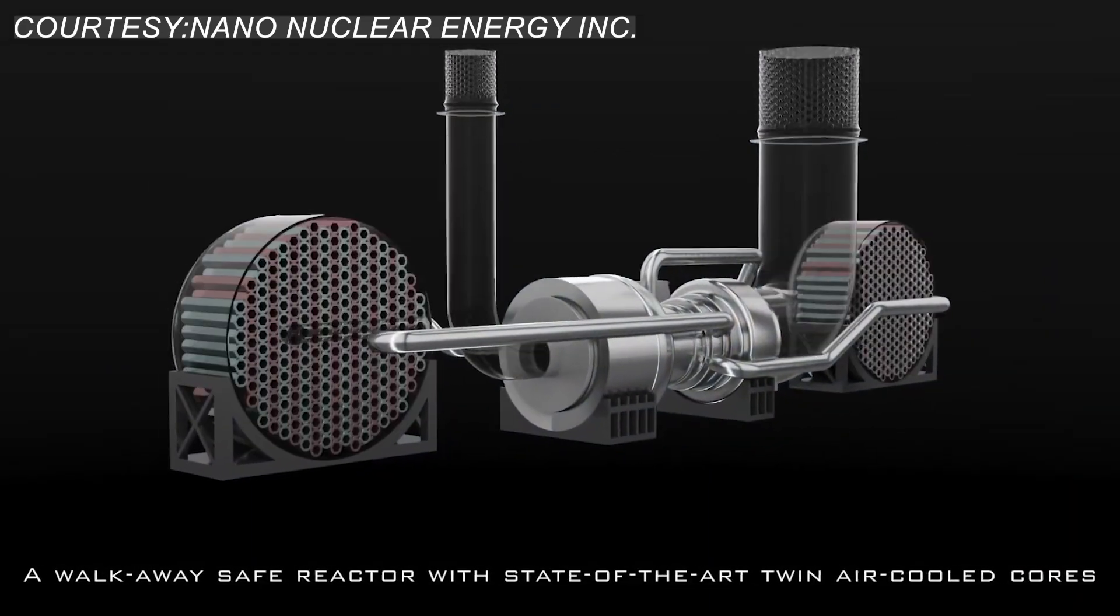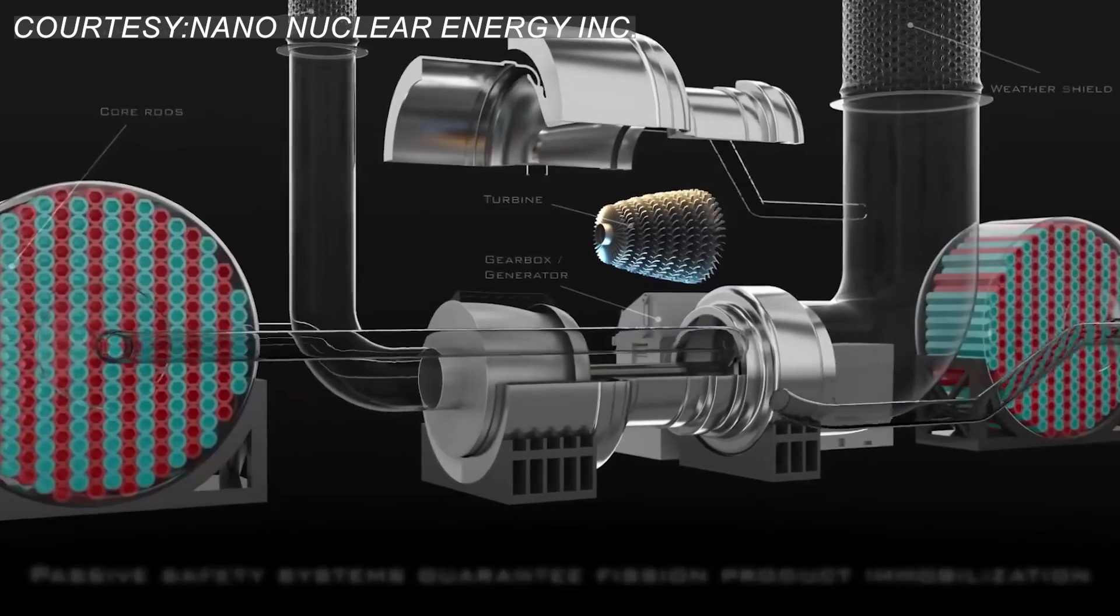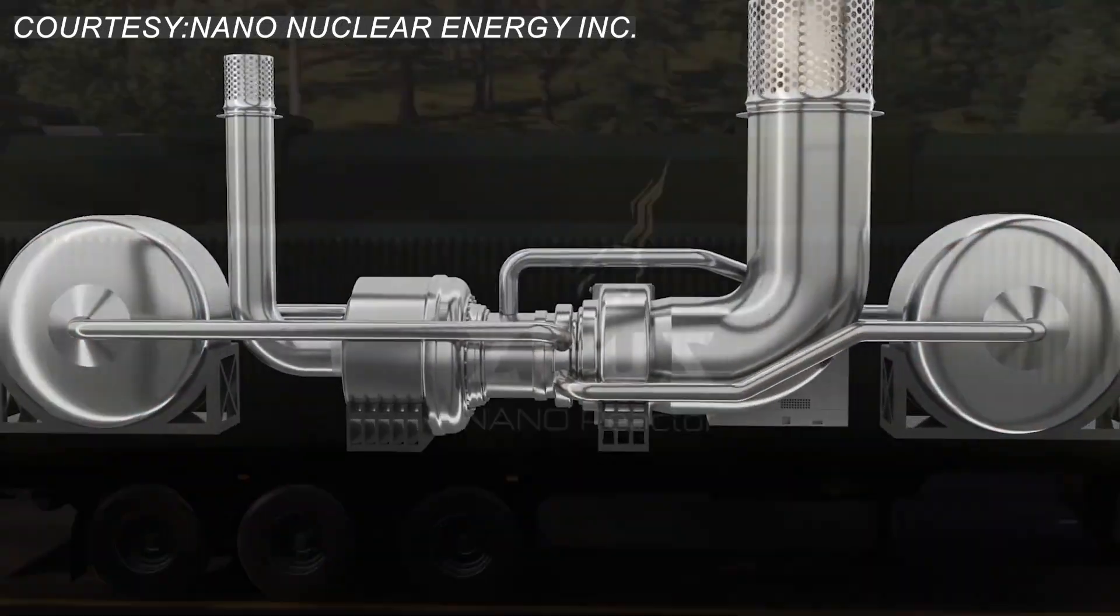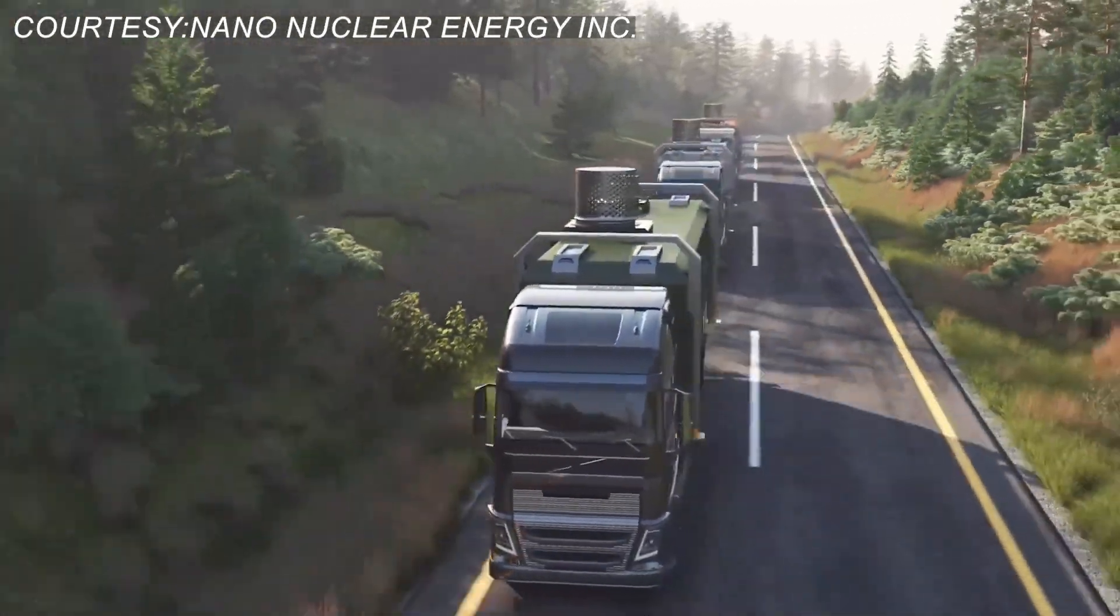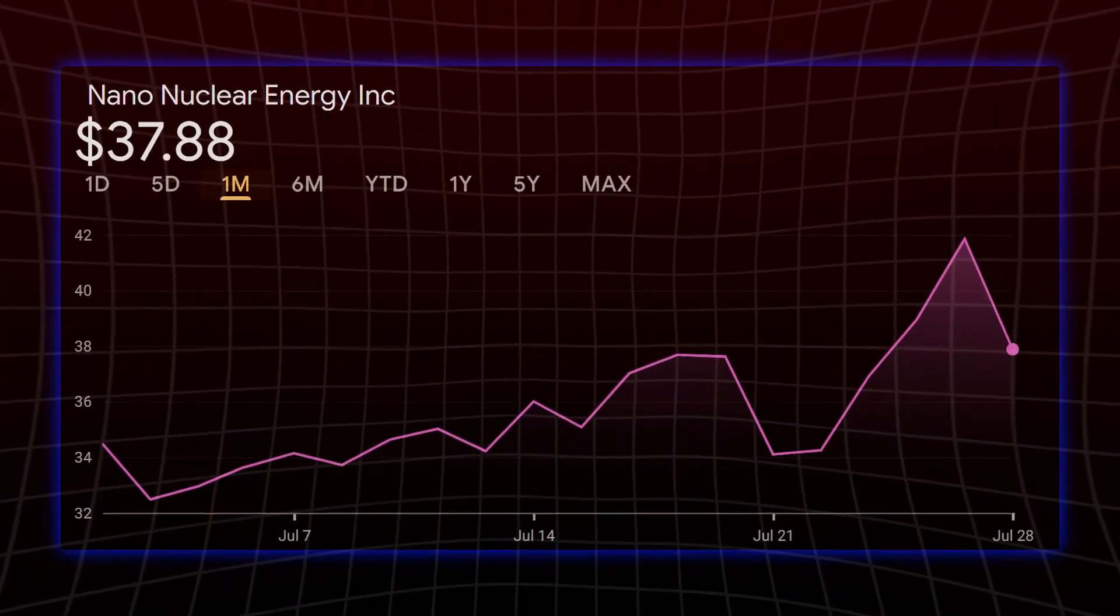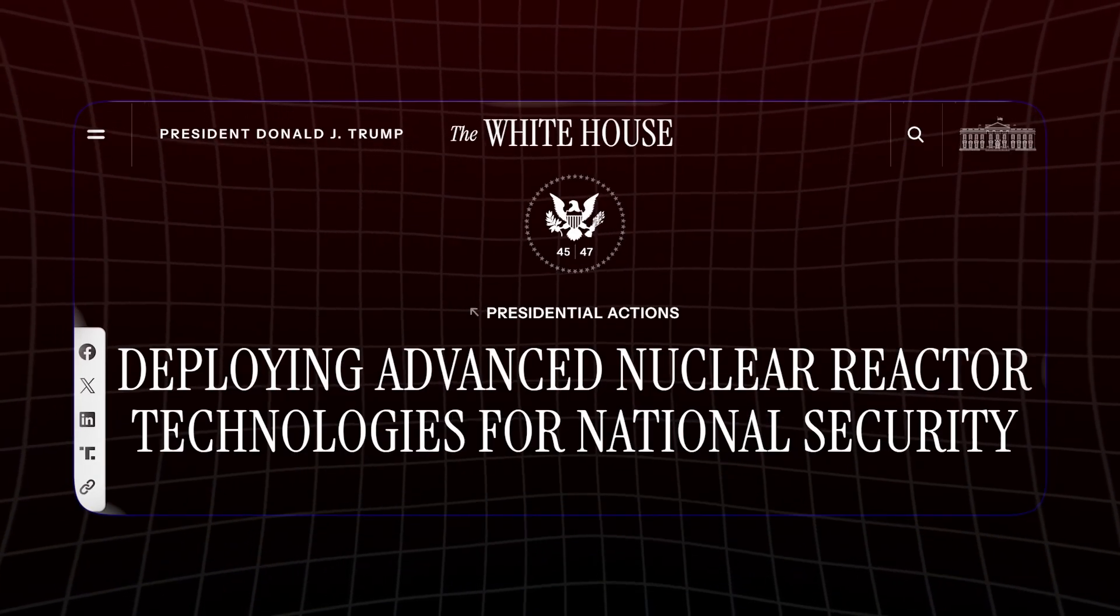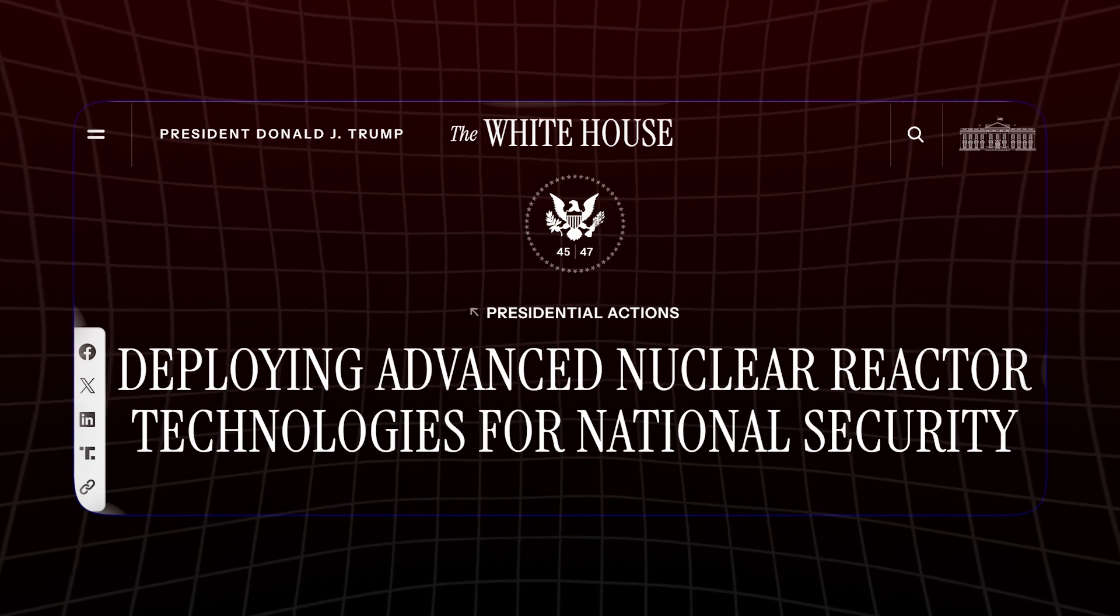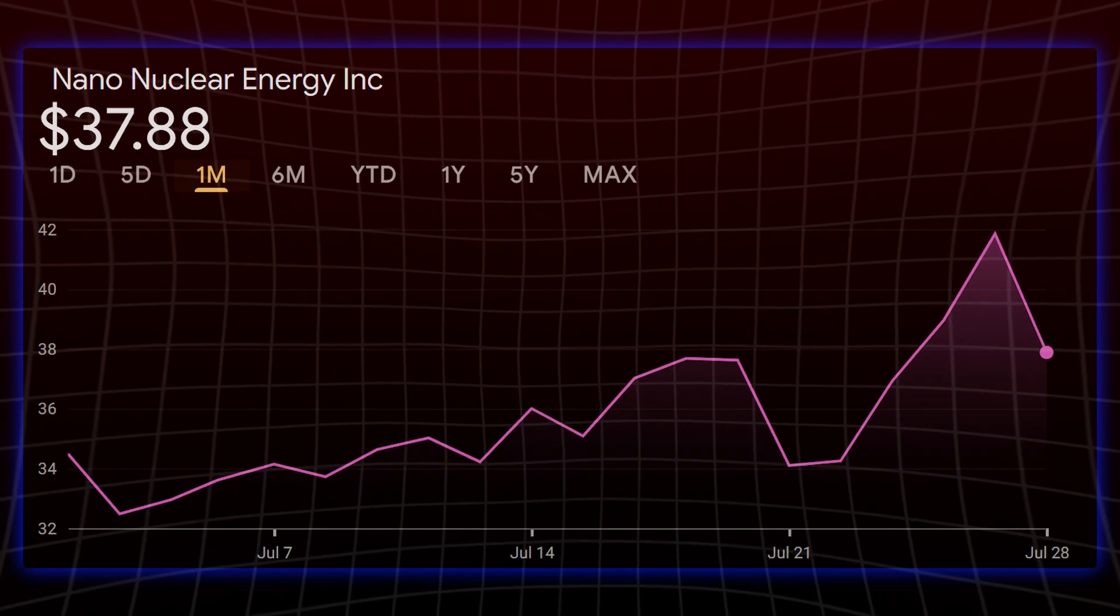There's real momentum here. In July, Nano completed development of its ALIP system — a major milestone in demonstrating its ability to move radioactive fluid efficiently without mechanical parts — crucial for compact, durable reactors. That announcement sent the stock up over 7% in a single day. Add in political tailwinds like the executive order classifying micro-reactors as critical to national security, and Nano's long-term runway just got a lot brighter.